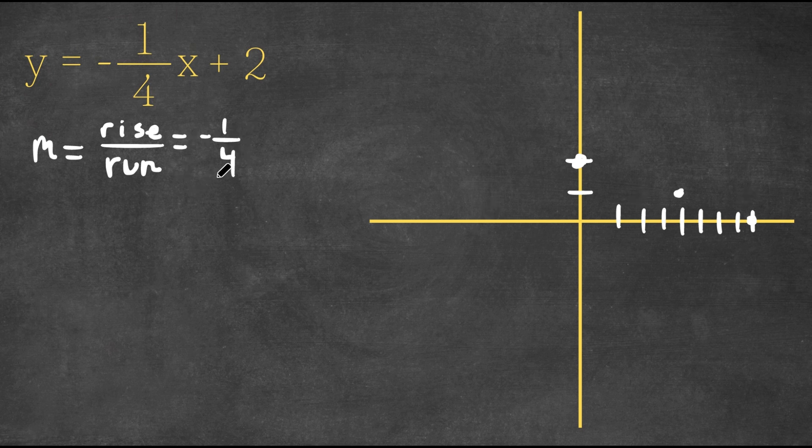Now let's try doing it the other way. Let's have a positive rise and a negative run. So now we're going to go up by one, and we're going to go to the left by four. So one, two, three, four, it's going to be over here.